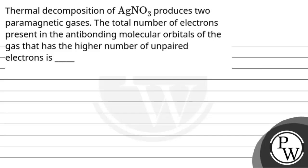Hello, Bacho. Let's read the question. The question says: thermal decomposition of AgNO3 produces two paramagnetic gases. The total number of electrons present in the antibonding molecular orbitals of the gas that has the higher number of unpaired electrons is?